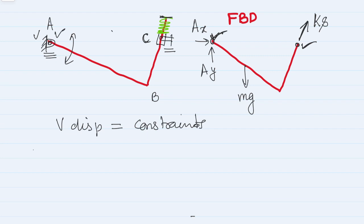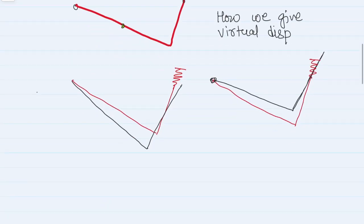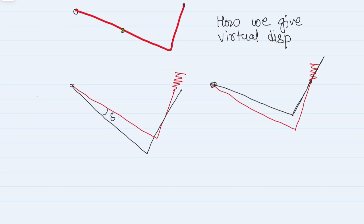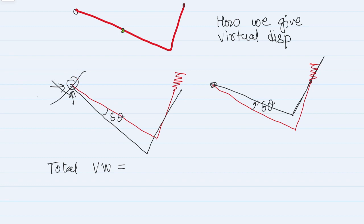I have two choices: I can rotate the rod in the upward direction or in the downward direction, both with a small angular displacement delta theta. Once the virtual displacement is applied, I write the expression for total virtual work. The reaction forces A_x and A_y are not of interest since point A is not moving. Only two forces matter: the gravitational force and the spring force.